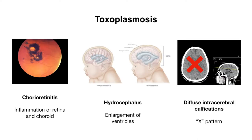Let's start with toxoplasmosis, which is caused by a protozoan parasite, and primary infection during pregnancy can result in this disease. Infants can present with chorioretinitis, which is inflammation of the retina and choroid of the eye, with findings visible on fundoscopic exam. Patients can also have hydrocephalus — an enlargement of the ventricles — as well as diffuse intracerebral calcifications. To remember this, imagine the calcifications are distributed in an X pattern, consistent with the X you see in toxo.